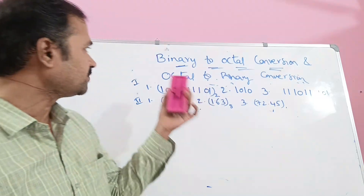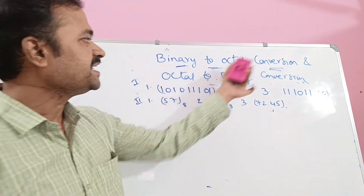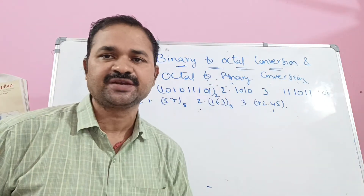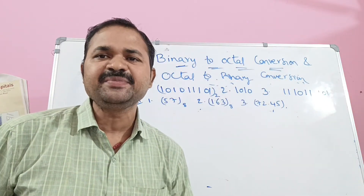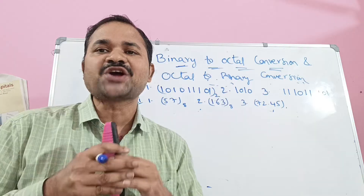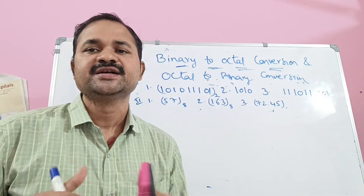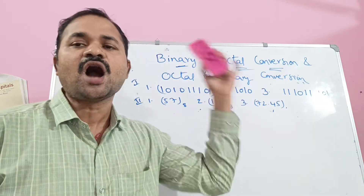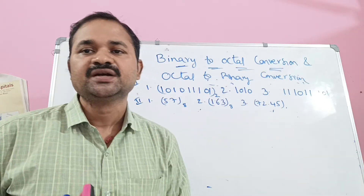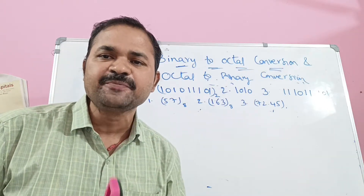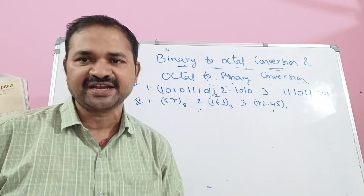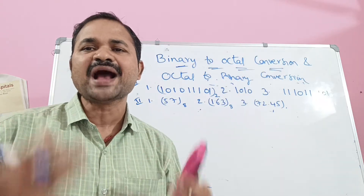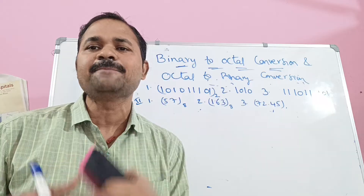Now let us discuss binary to octal conversion and octal to binary conversion. Binary means 2 — it is a combination of two symbols: 0 and 1. Octal means 8 — it is a combination of symbols from 0 to 7. For the digits from 0 to 7, we have to represent the binary image.